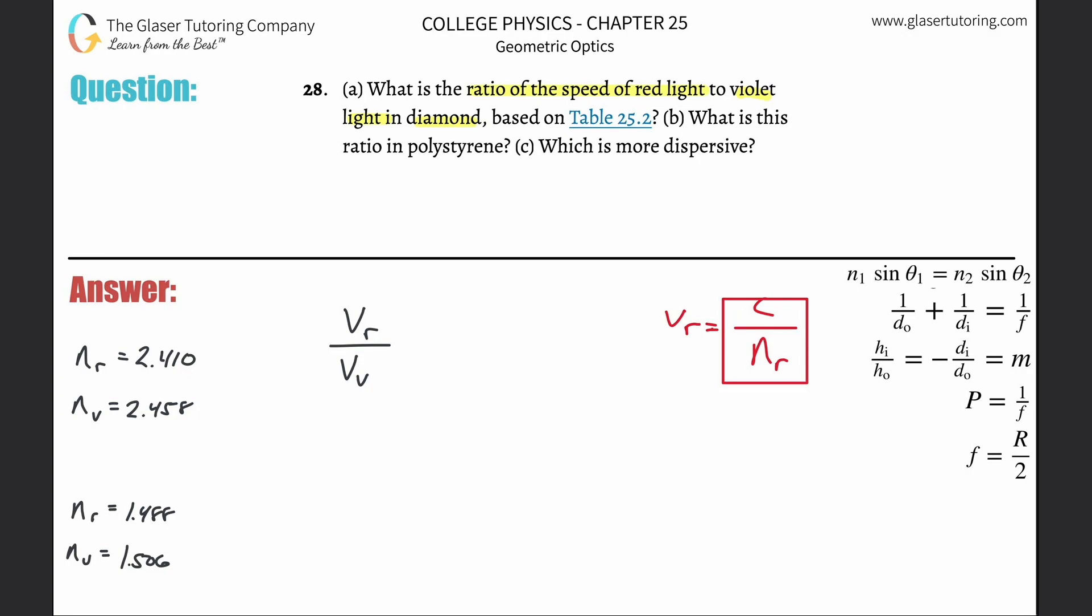So what I can basically do now is take this fraction, and I can plug it in for this. And what you would notice is you would do basically the same exact thing for the violet light. In other words, this ratio now works out to be the speed of light divided by the index of refraction for red light in diamond divided by the speed of light divided by the index of refraction for violet light in diamond.